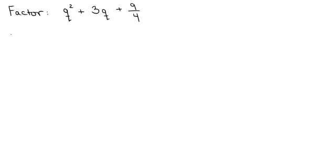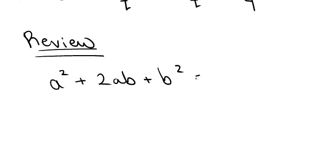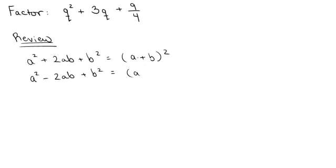I would want to make sure that my students remembered that when factoring perfect square trinomials, we need to have memorized that a² + 2ab + b² = (a + b)² and that a² - 2ab + b² = (a - b)². We need to have these memorized.